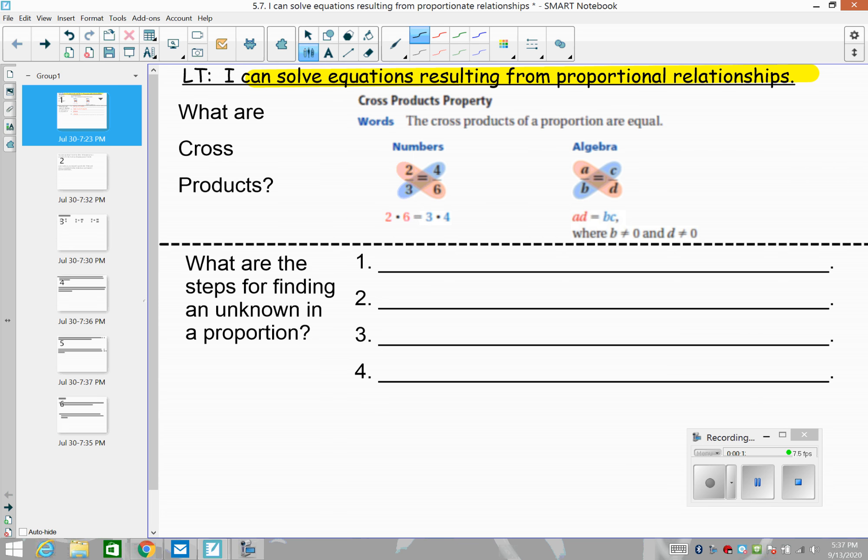So we learned yesterday that we're talking about the relationship of when the y-intercept is zero. So when that happens, then we can take cross products, this thing called cross products, which you probably have learned in elementary school.